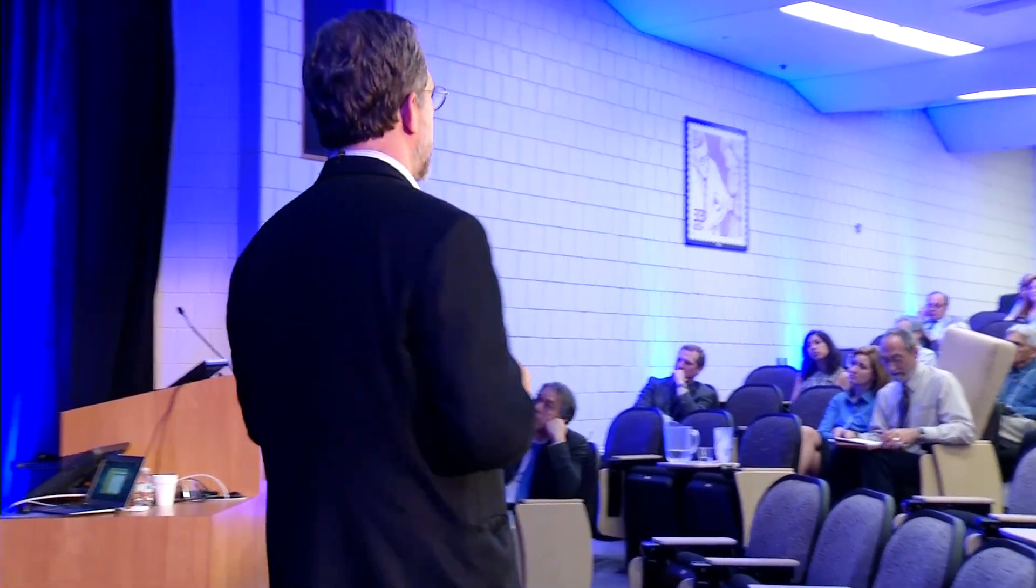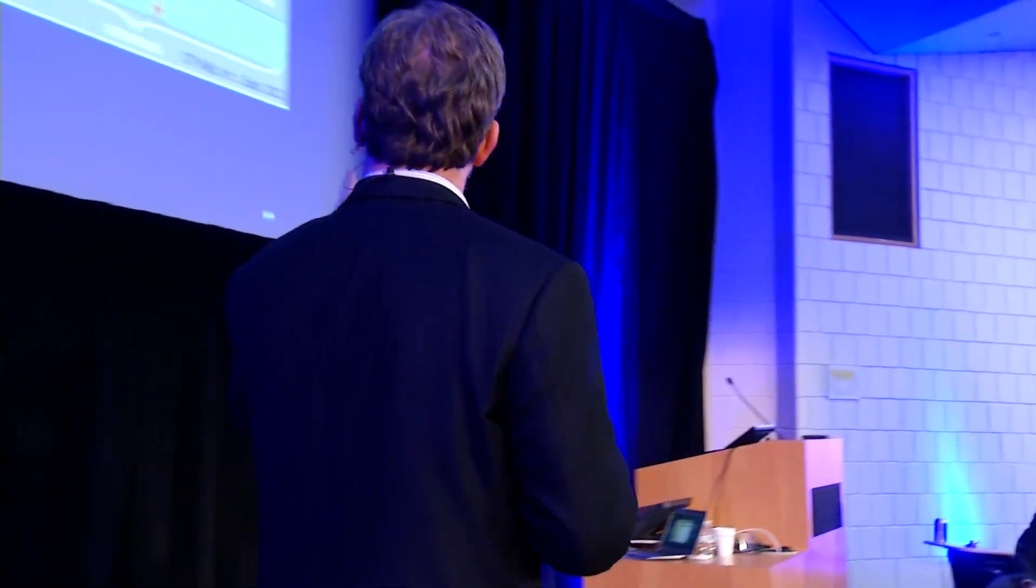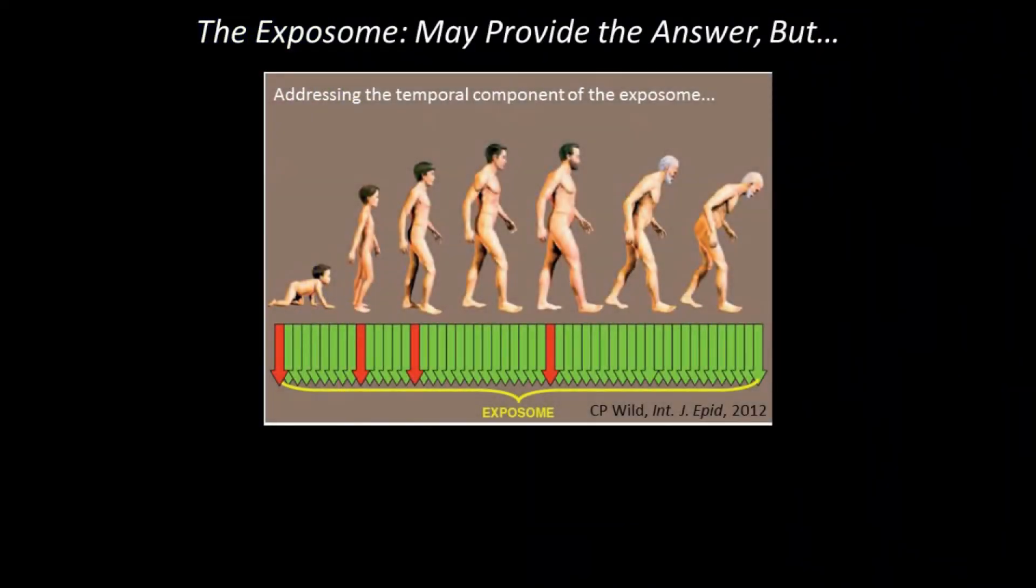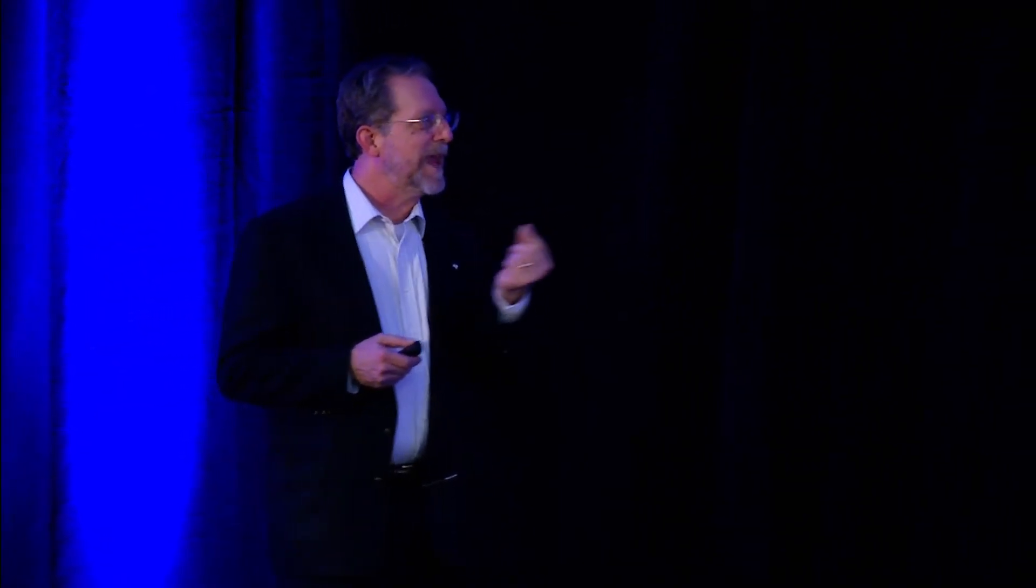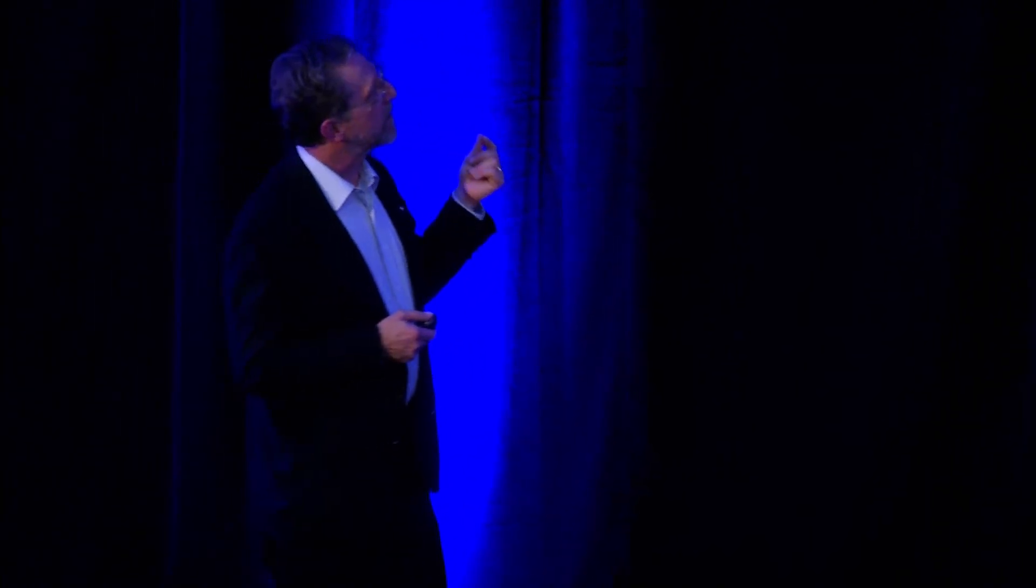So the concept of the exposome is thought to be one that might be able to help us answer these questions, address these shortcomings in exposure assessment. This diagram is from Chris Wilde's latest paper, just came out this month, and it provides sort of a nice summary of what this is all about. It emphasizes the fact that the exposome, unlike many other omics endpoints, is in flux all the time, and tries to address that temporal component of the exposome.